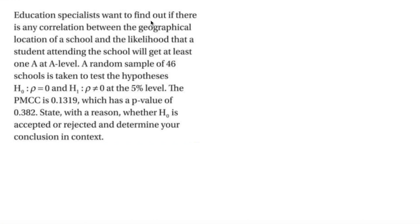The next question: an education specialist wants to find out if there is any correlation between the geographical location of a school and the likelihood that a student will get at least one A at A-level. A random sample of 46 schools is taken. H0 is rho equals zero and H1 is rho not equal to zero — a two-tailed test at 5% significance. The PMCC is 0.1319 and the p-value is 0.382. For a two-tailed test, the significance level to compare against is 0.025.